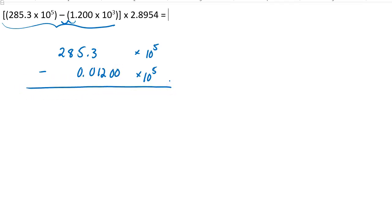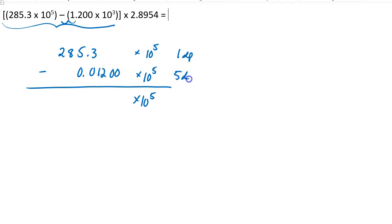And now I'm going to follow the rule for subtraction, which means I'm paying attention to decimal places. Let me bring down my 10 to the 5th. Here I've got 1 decimal place, and here I've got 5 decimal places. My answer, therefore, better only have 1 decimal place.